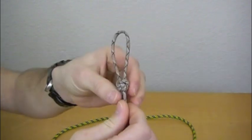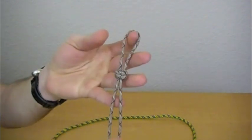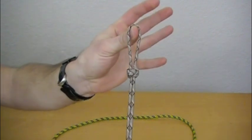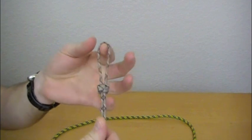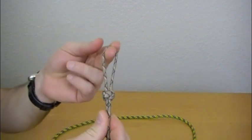The lanyard knot could be used for the basis of, for instance, a Solomon bar knot, or used as a decorative knot, or even anything that requires a loop, a fixed loop.